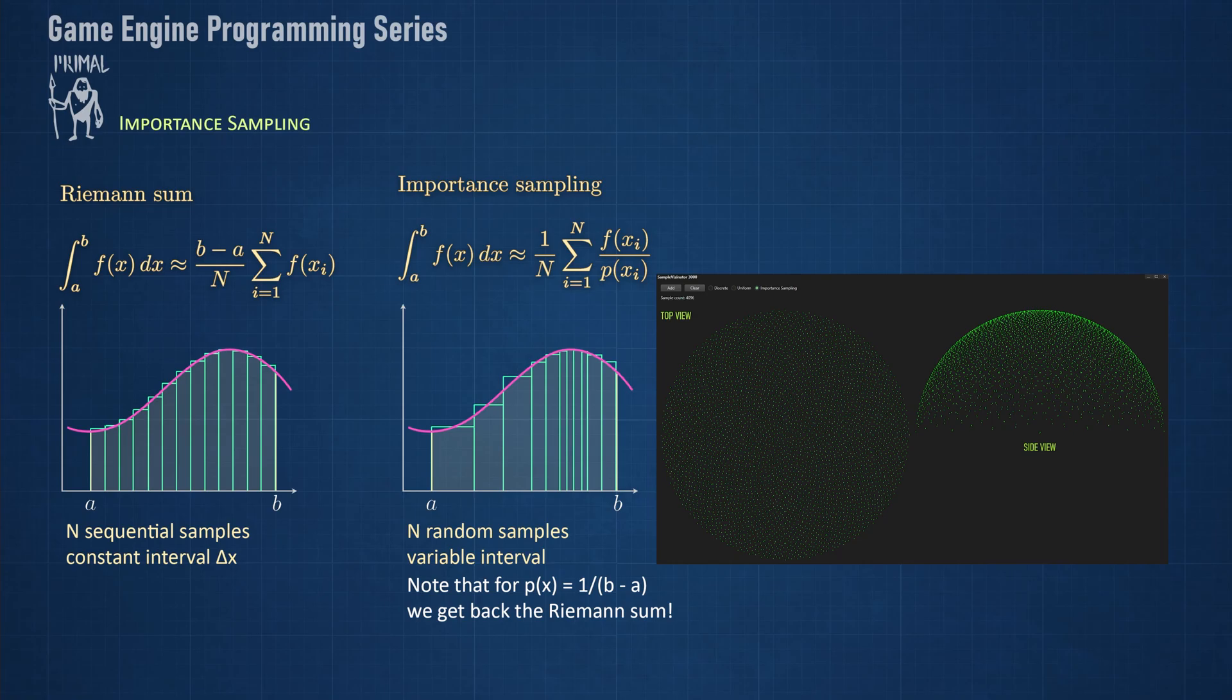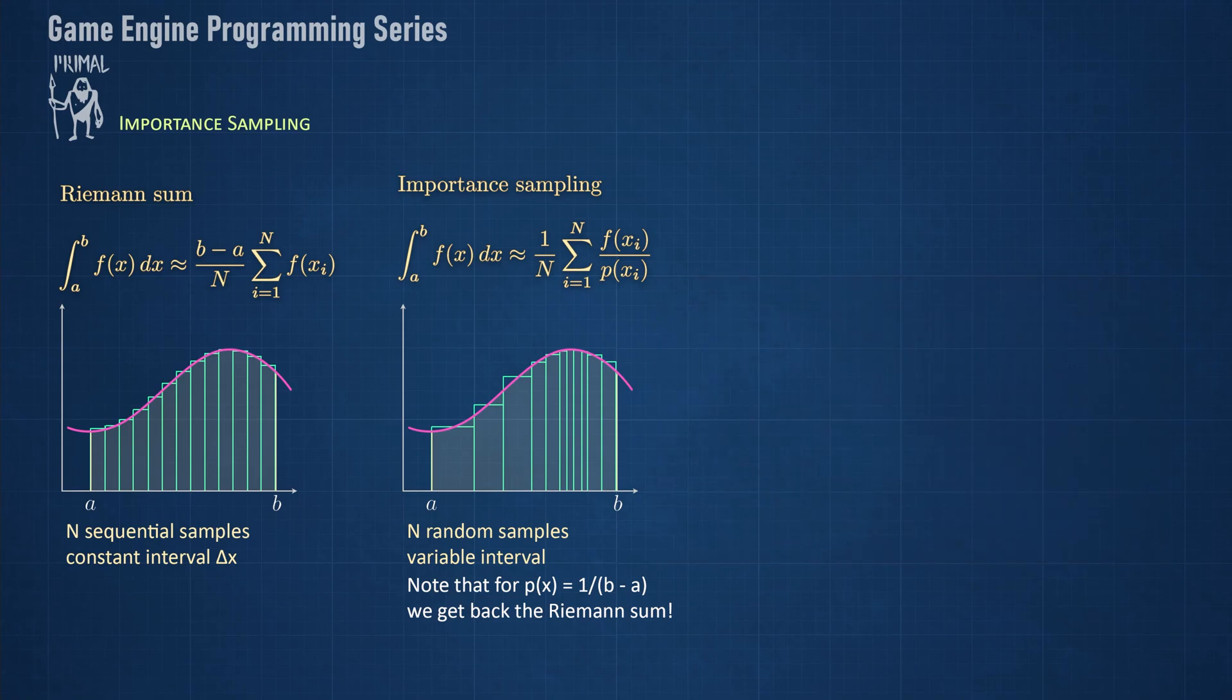In fact, if we take 1 over B minus A for the P of X function, we get back exactly the Riemann sum. However, this time the samples are taken at random positions instead of sequentially. P of X is a function that determines how probable it is to take a sample at a random location. The challenge is therefore to find a P of X that leads to the closest approximation of the integral.